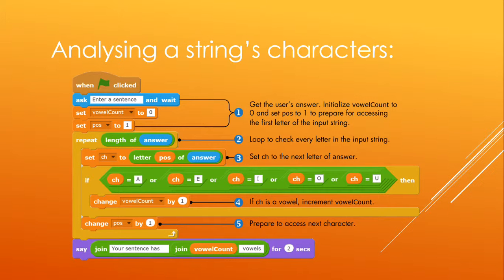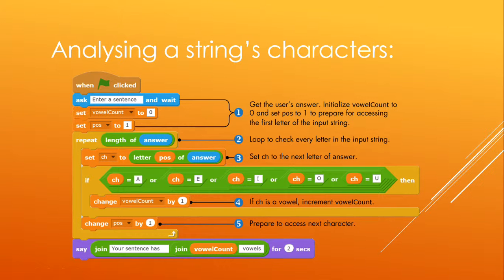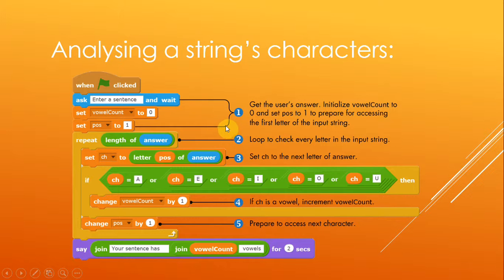Analyzing a string's characters — this is a more complicated exercise you can try yourself. In this example, you enter a sentence and then it tells you how many vowels — A, E, I, O, U — were in your sentence. The beginning part is straightforward: using the ask function it says 'please enter the sentence and wait', then sets or clears your two control variables. One stores how many vowels are in the sentence, and the second one — your position variable — is used to step through each position in the sentence and analyze the letter at each position.